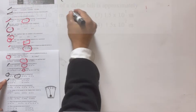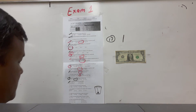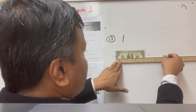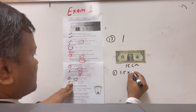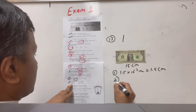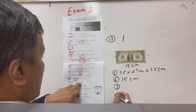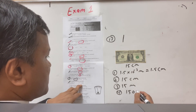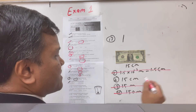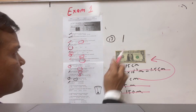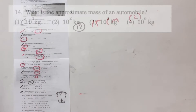Number thirteen: the length of a dollar bill. Taking a ruler and measuring, a dollar bill is 15 centimeters. The options are 5 × 10⁻² meters (0.5 cm), 15 centimeters, 15 meters, and 150 meters. We measured it — it's 15 centimeters — so the answer is option number two.